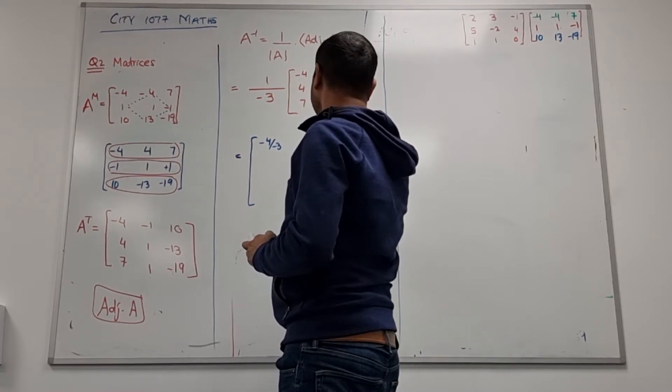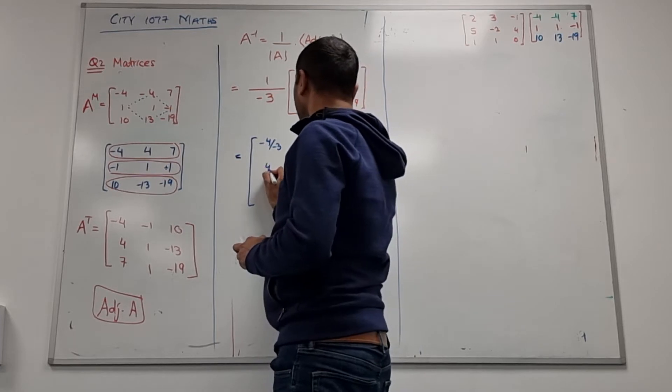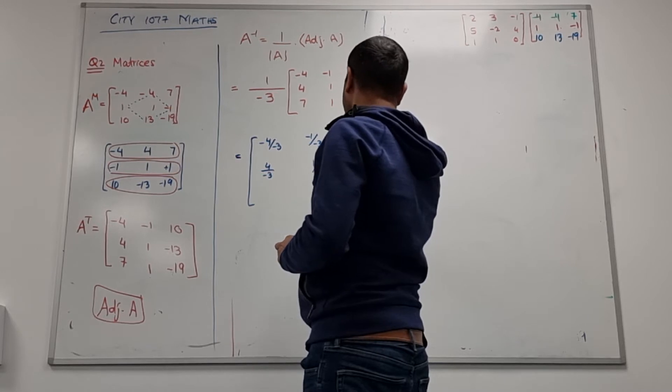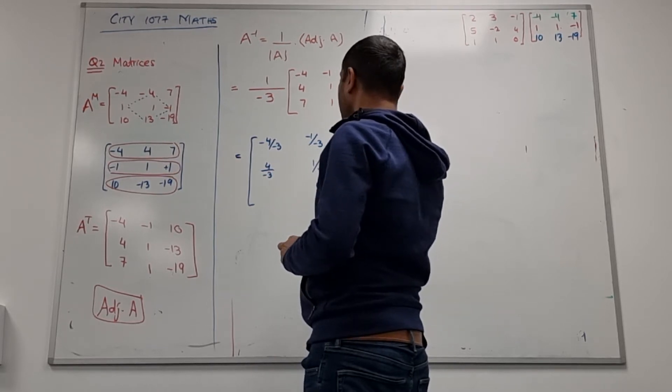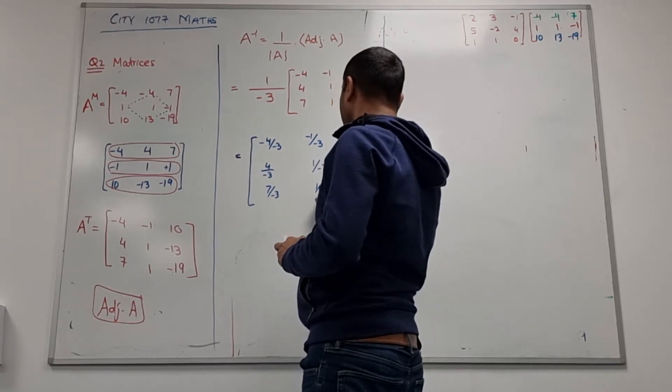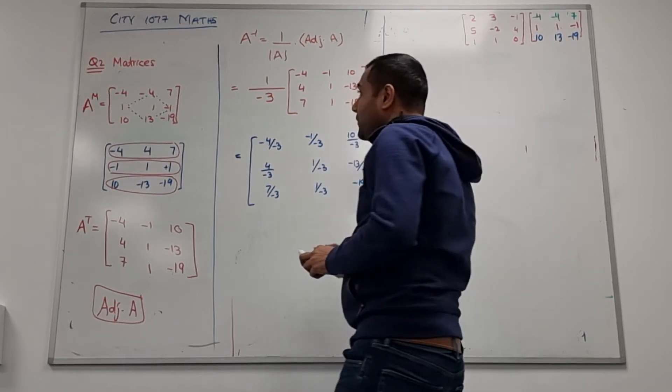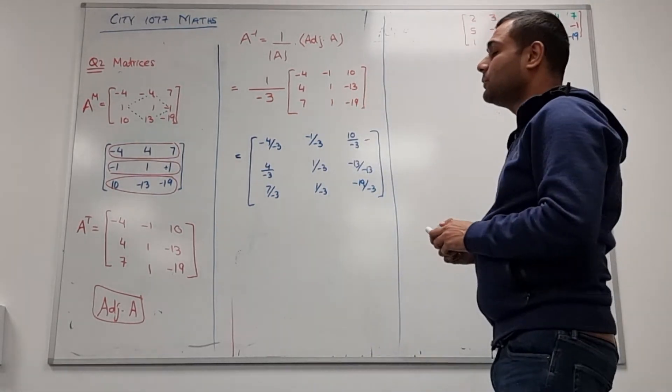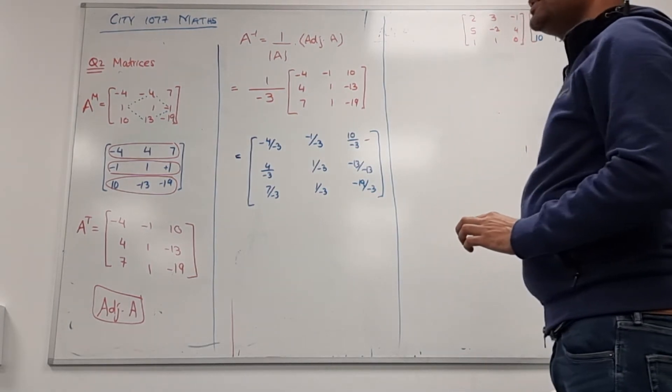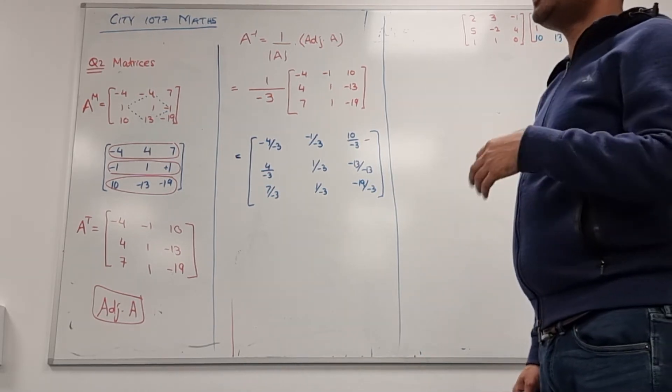Minus 4 over minus 3, minus 1 over minus 3, 10 over minus 3, 4 over minus 3, 1 over minus 3, minus 13 over minus 3, 7 over minus 3, 1 over minus 3, minus 19 over minus 3. It's up to you if you want to convert that into decimals.